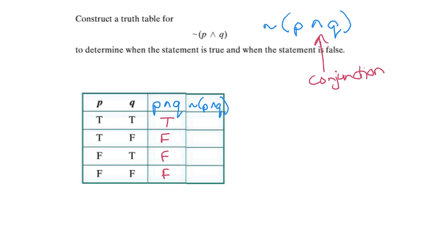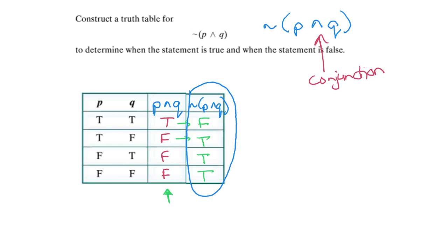Now I focus solely on the p∧q column and take the negation of it. The negation of true gives false, and the negation of false gives true. When the problem asks you to determine when the statement is true and when it is false, the answer column is that final column. Take your statements step by step, break them apart, and the last column should represent your original statement.